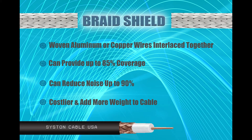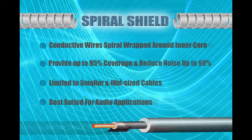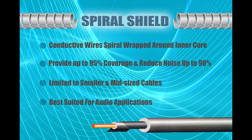The downside of braid shielding design is that it is more costly and adds weight to the final design. A spiral shield is made of conductive wire wrapped in a spiral around the inner cable core and can mitigate noise up to 98%.